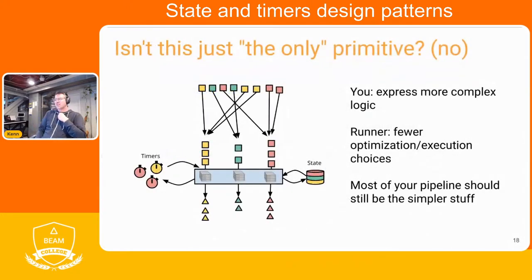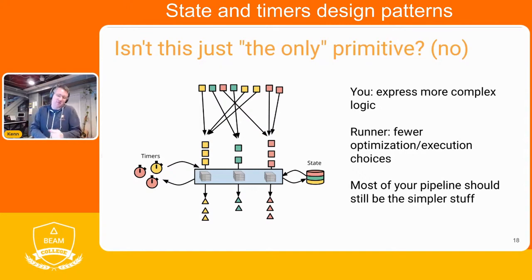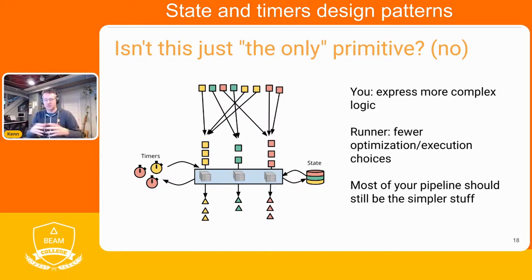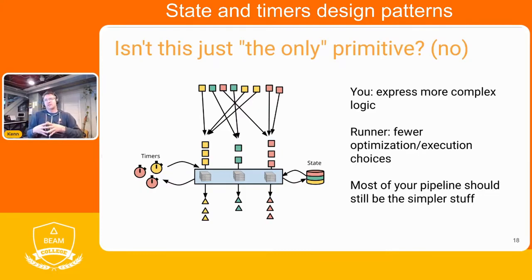Some people might think: thanks for this great other way of doing processing, I'm only going to use this all the time. You can, but please don't — this is lower level. Single threading is the opposite of parallelism, so you take exact control of what parallelism is available in your pipeline, and it's a lot of boilerplate. This is an underlying primitive for a lot of stream processors, but you should use the high-level Beam primitives for most of your work. In a very complex pipeline, state and timers might show up, but reach for it when it's the right tool, not just because it's the only tool.